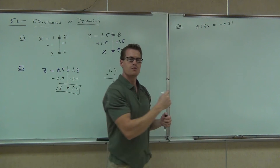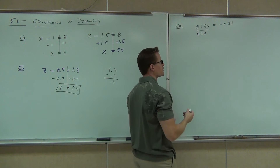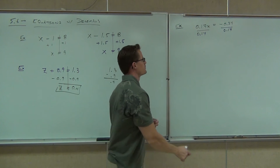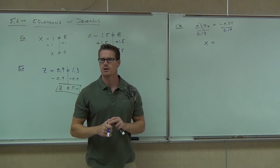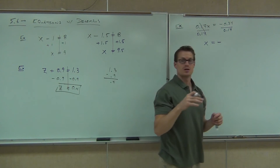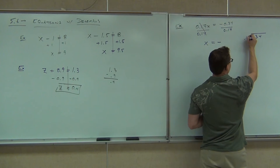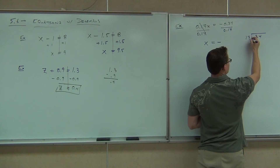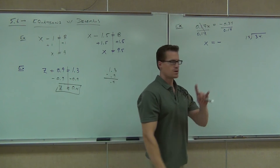That's just the number in front of our x. To remove that coefficient, we divide by exactly what that number is — in our case, 0.17. You just have to make sure you're doing it on both sides. On the left-hand side, we get x. On the right-hand side, is our answer going to be positive or negative? Negative — division rule. Do the division off to the side: 0.34 divided by 0.17. Move the decimal two places — 0.17 becomes 17, 0.34 becomes 34. 17 goes into 34 two times. And that's your answer.